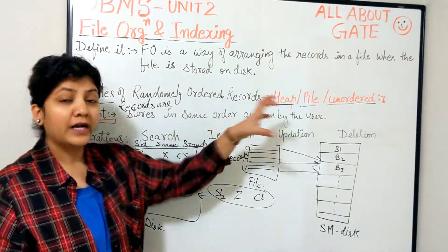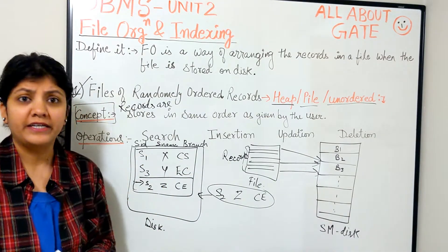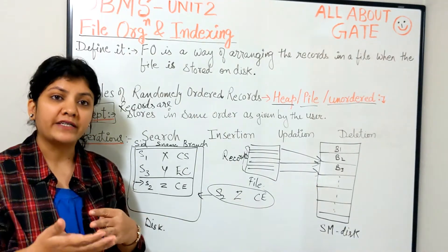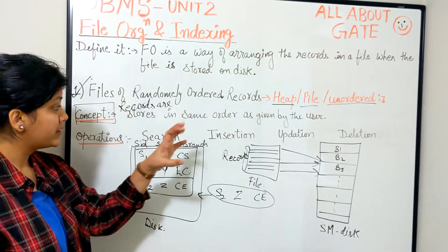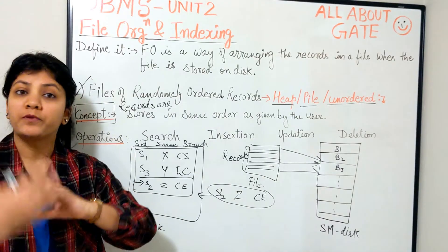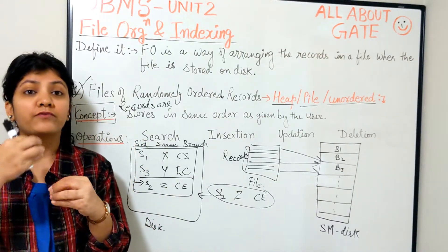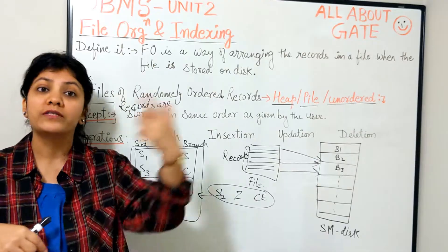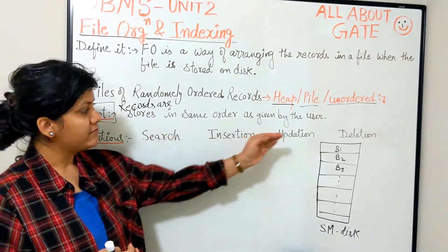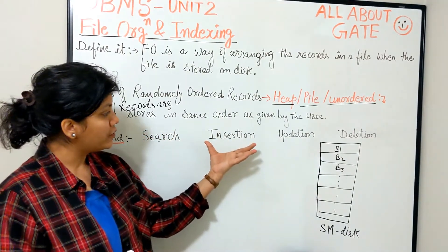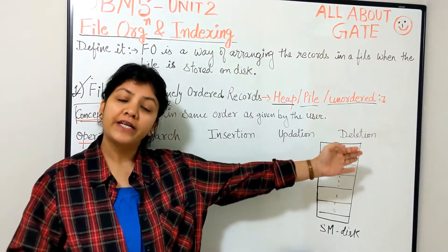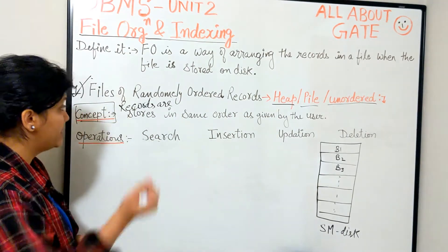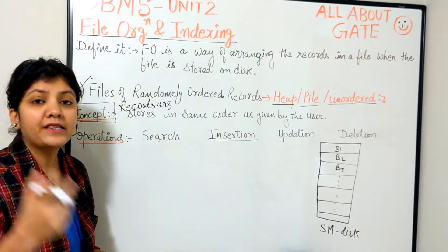This is the simplest unordered file organization. Now, the effect of this organization we will see in terms of operations. Every file organization will be checked on how efficiently a particular operation can be performed on it. We know the operations that can be done: retrieval, simple search, and updation operations which could be insertion, updation, or deletion of a particular record or group of records.